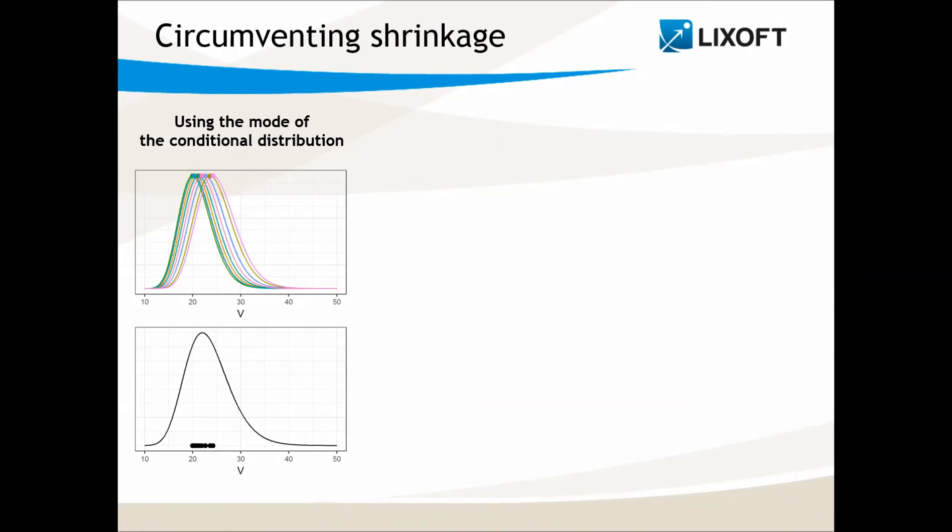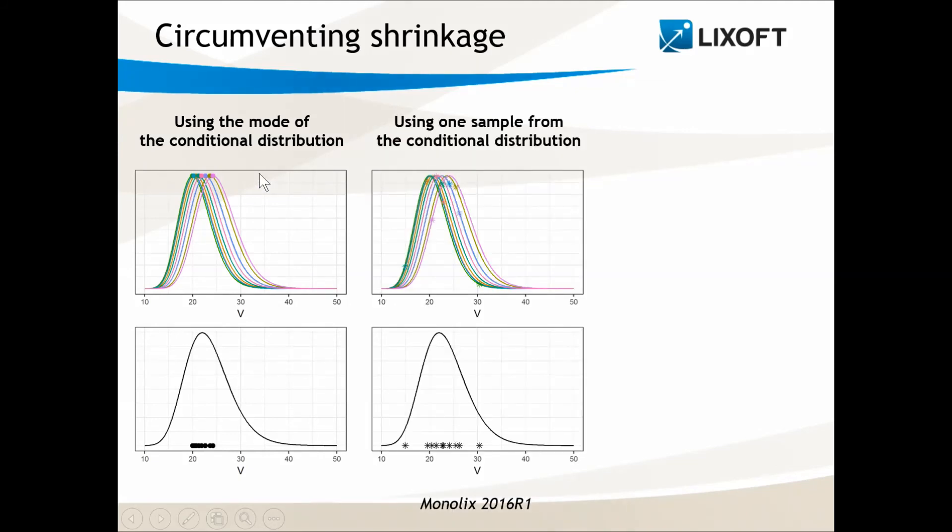In Monolix, we have a special technique to go around the shrinkage problem. Instead of using the mode, we use random samples from the conditional distribution, as are denoted here by the stars.